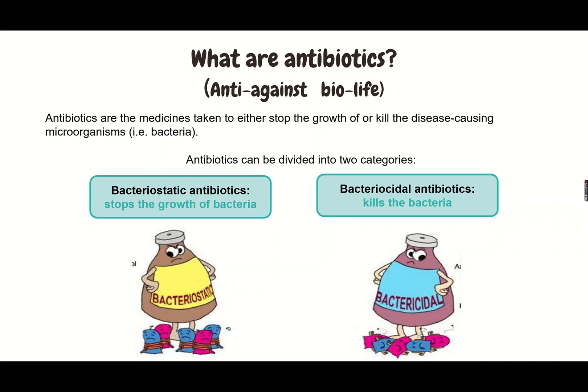Antibiotics can be broadly divided into two categories. The first category is bacteriostatic antibiotics, which stop the growth of bacteria. When you are infected by bacteria, bacteriostatic antibiotics stop the bacteria's growth and prevent it from reproducing, so it cannot spread the infection further. The small number of bacteria remaining in the body will die over time, and our immune system will help eliminate them, curing the infection.